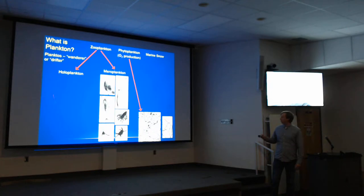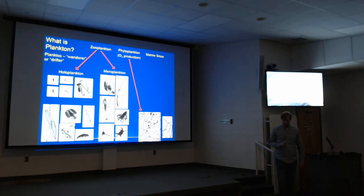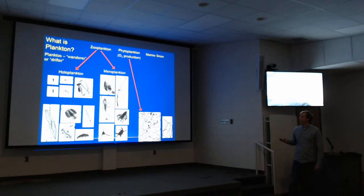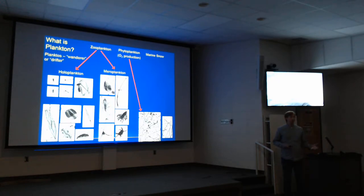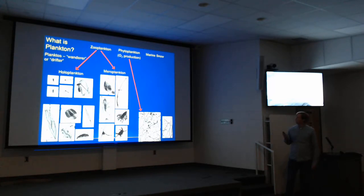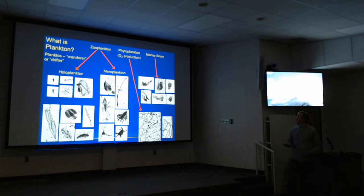Marine snow is a catch-all category of detrital material that's sinking through the water column — a very important part of the biological pump. I'm showing images from just offshore here in the northern Gulf of Mexico. Phytoplankton — this is an example of an aggregate of diatoms, these long chains. The zooplankton are divided into holoplankton, which spend their entire lives as plankton, and meroplankton, which make up the early life stages of most bony fishes and invertebrates.